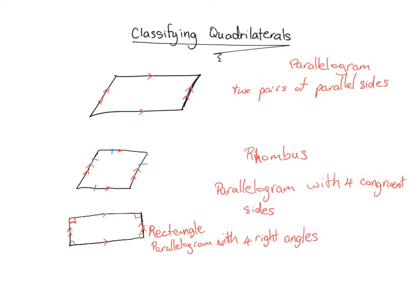The last quadrilateral we will look at in this video is the trapezoid. A trapezoid is not a parallelogram because it does not have two pairs of parallel sides. It actually only has one pair of parallel sides. What is important about the trapezoid is that it has exactly one pair of parallel sides — that's what makes it a trapezoid.